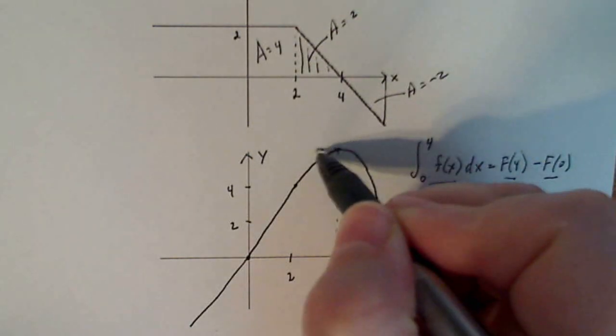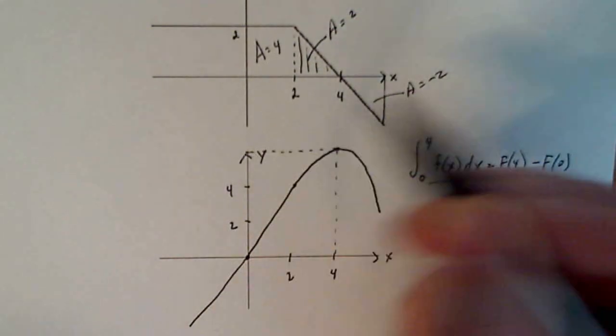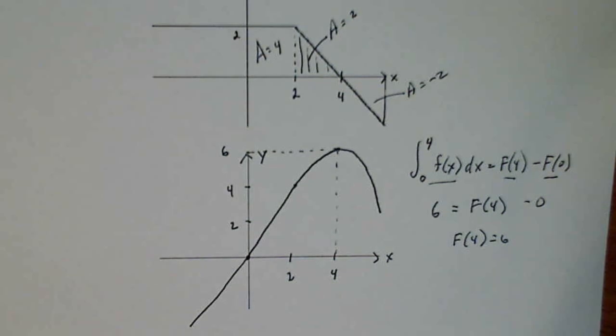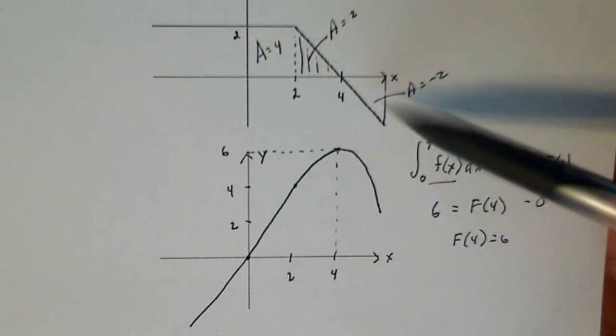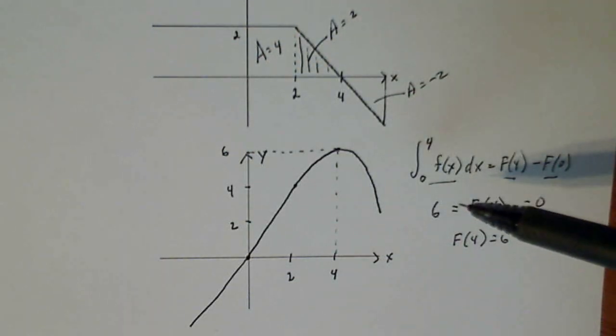So this guy right here to come across and be six, which I did a pretty good job there by eyeballing it, but that is a way to find particular values of your antiderivative using the fundamental theorem of calculus and just the area, what we understand the definite integral to be.